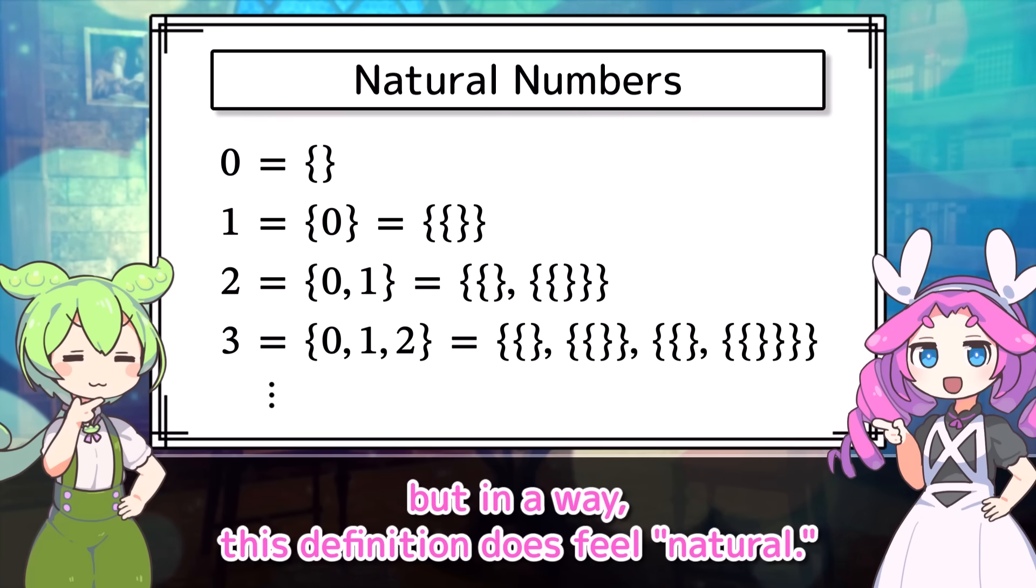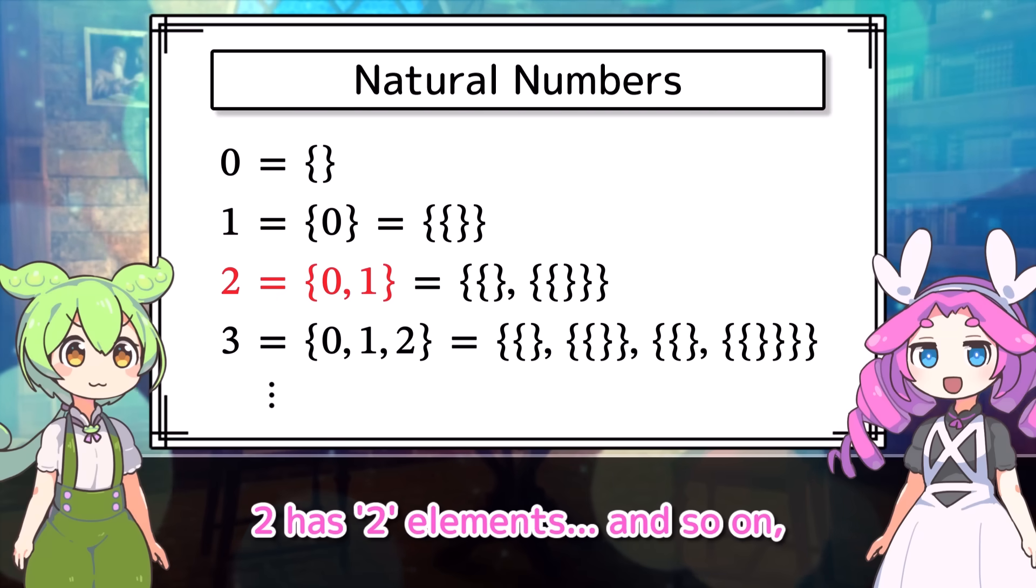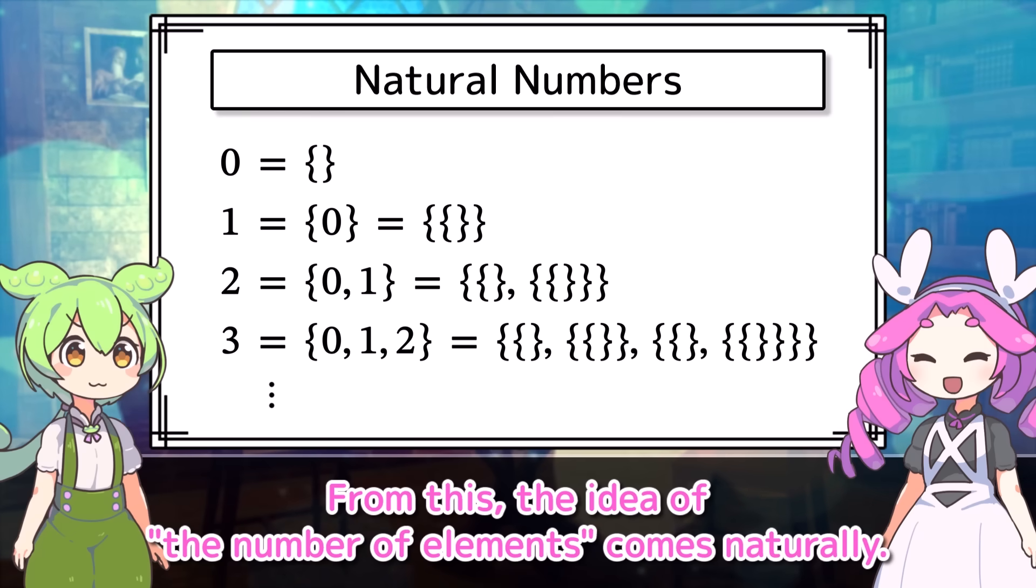But in a way, this definition does feel natural. Zero has zero elements. One has one element. Two has two elements. And so on. So n has n elements. From this, the idea of the number of elements comes naturally.